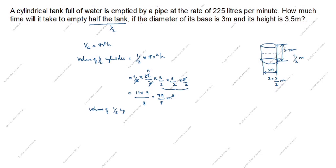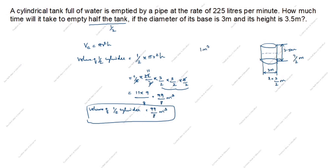Volume of half the cylinder equals 99 by 8 meter cube. But in this question, the rate is given as 225 liters per minute, and we got meter cube. So we need to convert: 1 meter cube equals 1000 liters. Therefore, volume of half cylinder equals 99 divided by 8 into 1000 liters.